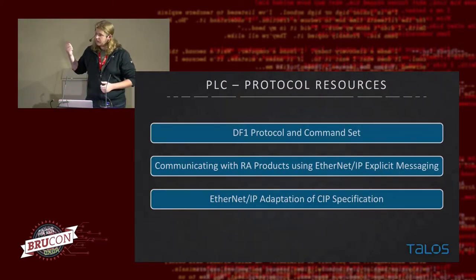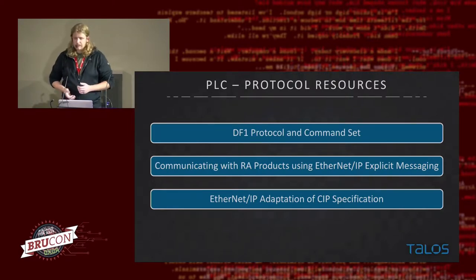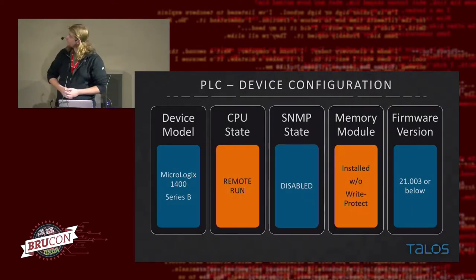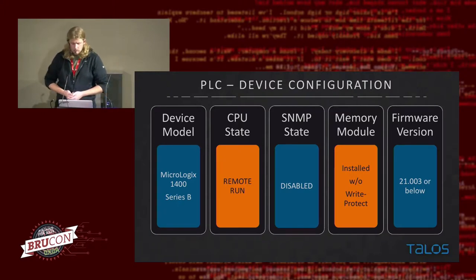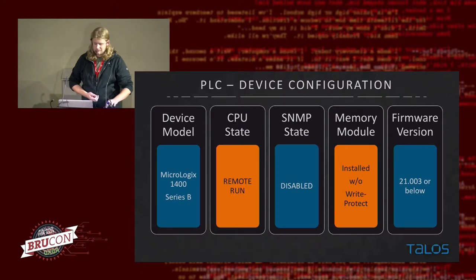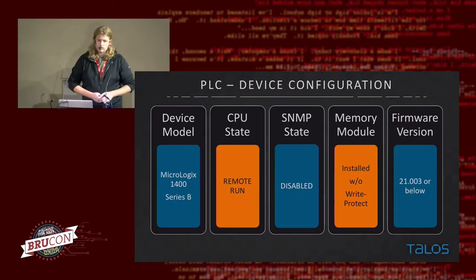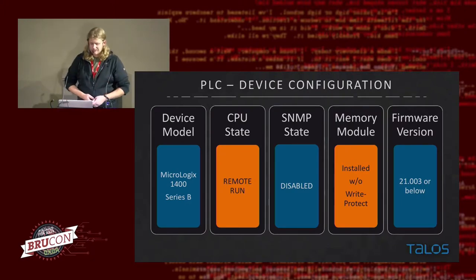If anybody is digging into this stuff in the future, there are three documents — one from the manufacturer and two that are just protocol specifications — that are really useful. With that out of the way, this is the base device configuration we're starting from for our attack: the 1400 Series B with the default SNMP state disabled — that's important. That's one of the big things we're going to focus on as a demo, with a firmware version of 21.003 or below. At the time we were working on this, 21.003 was the most up to date, and they've patched since and fixed a lot of what we'll talk about.